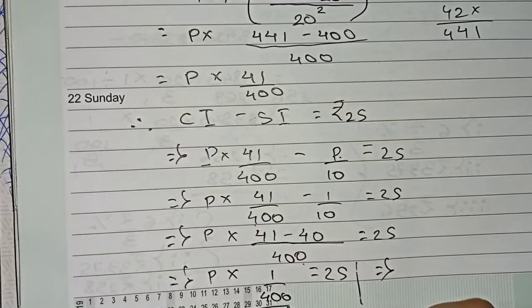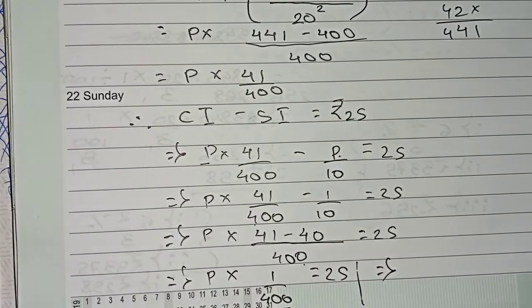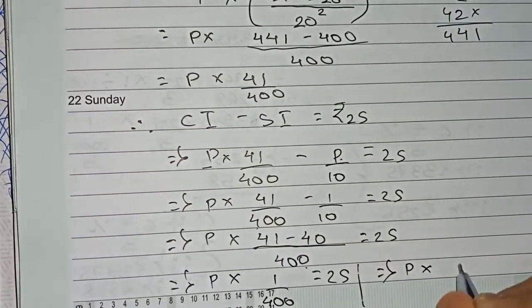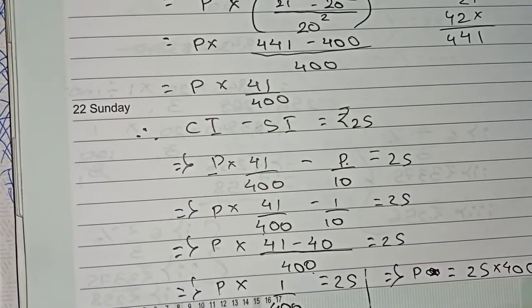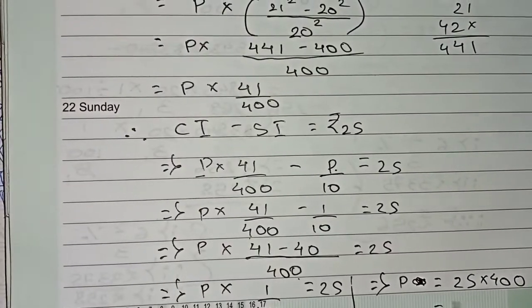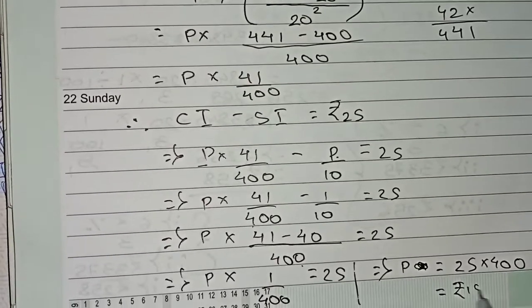We take this 400 to this side, so it goes for multiplication as it is here in division. So it will become P equals to 21 into 400 which will be equal to rupees 10,000.